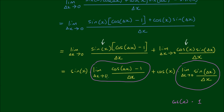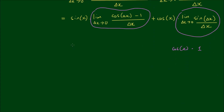Now we have to work out what the first limit is: the limit as Δx approaches zero of [cos(Δx) − 1] / Δx. If we approach zero directly, cosine(Δx) goes to one, so we have one minus one on top, which is zero, and Δx approaches zero on the bottom — giving us zero divided by zero again. So we're going to multiply by the conjugate of the numerator, top and bottom: [cos(Δx) + 1] / [cos(Δx) + 1].